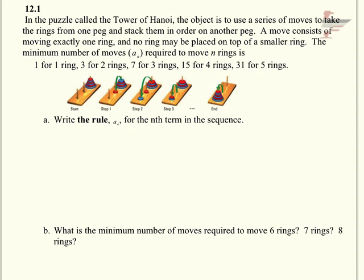So if I summarize this in a table with n and a_n, we know that when n is 1, a_n is 1. When n is... oops, I flipped these around. This should be 2 and 3.